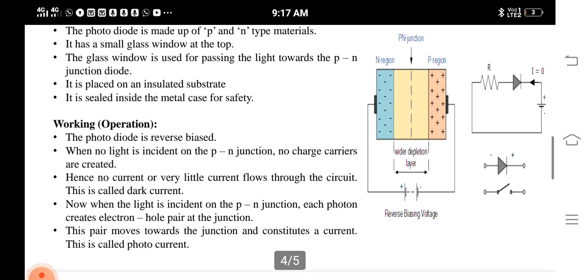The working of photocurrent is as follows. The photodiode is reverse biased. When no light is incident on the PN junction, there are no charge carriers created. Hence, no current or very little current flows through the circuit. This is called dark current.